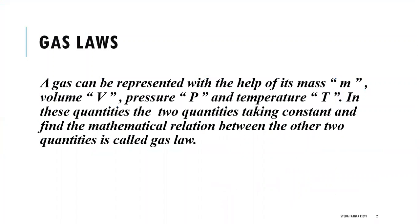What is a gas law? To represent any gas, we need four parameters: mass, volume, pressure, and temperature. We define a gas by these four parameters. If we fix two parameters and find the relation between the other two, then that gives us a gas law. For example, if we take mass and temperature constant, the relation between pressure and volume becomes a gas law.